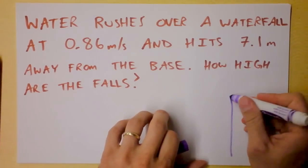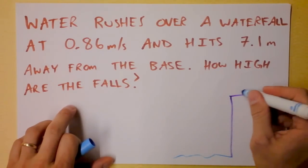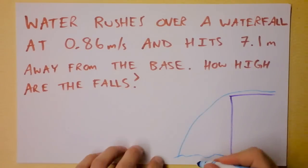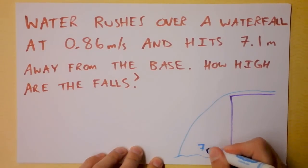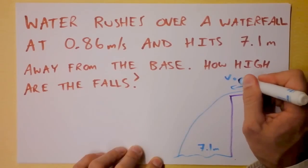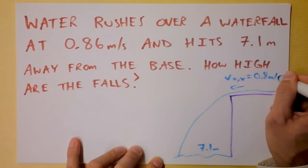We got a purple cliff and there's water coming right here and it's hitting here and it's going in a parabola like that. So this distance here is 7.1 meters and we know how fast it's going. V naught in the x direction equals 0.86 meters per second.